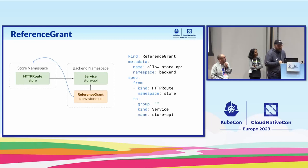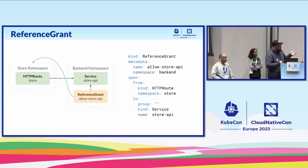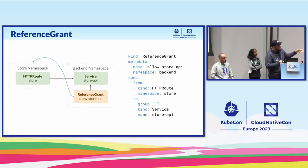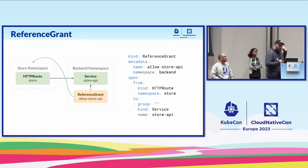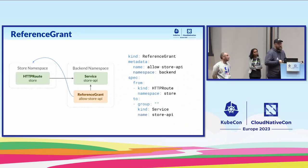One of the non-route APIs is reference grant. One problem we ran into in Gateway API was the ability to have an HTTP route — or any route — reach a service in another namespace, which has security concerns. Reference grant is basically a two-way handshake: the HTTP route wants to go to a service in a back-end namespace from the store namespace, and somebody with RBAC permissions in that other namespace needs to approve it, then the controller starts forwarding traffic. That's a very cursory overview of these APIs.